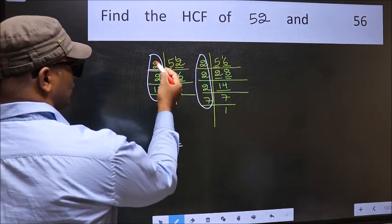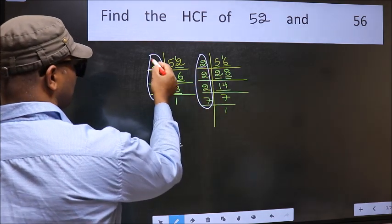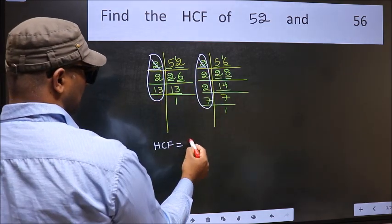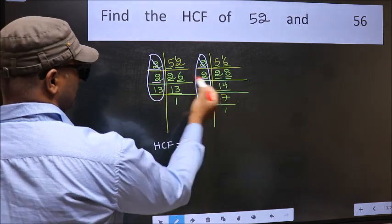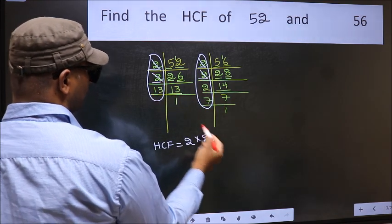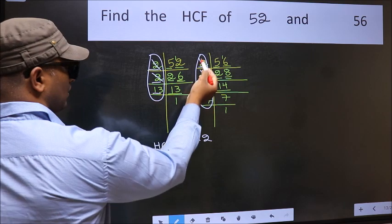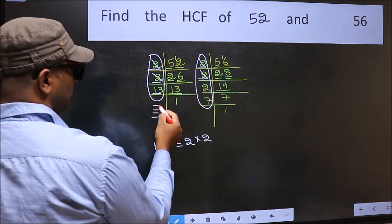So now let us find the numbers which should be present here and here. Starting with the number 2. Do we have 2 here? Yes. So cut 2 right here. Next number 13. Do we have 13 here? No. No more numbers have been left out.